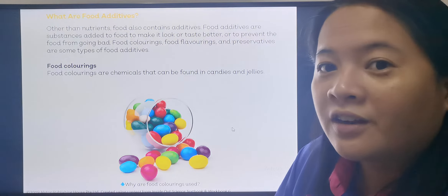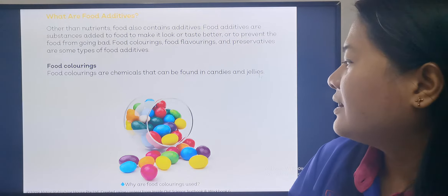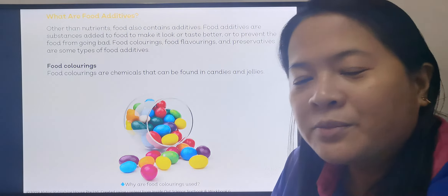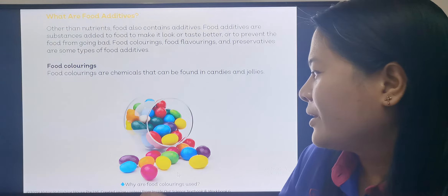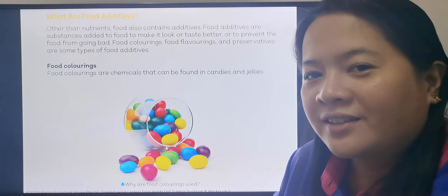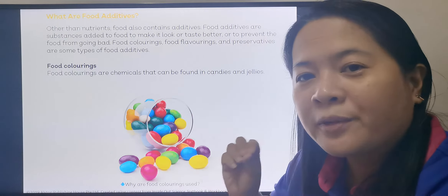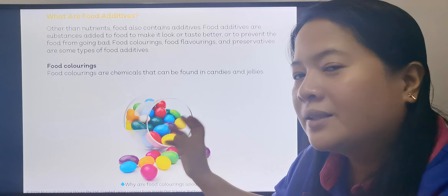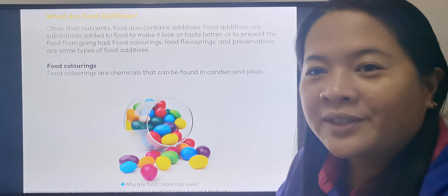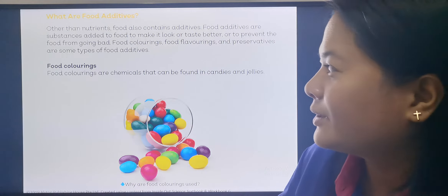Let's start with food colorings. Food colorings are chemicals that can be found in candies and jellies. If you look at this, most children like to eat M&Ms or Skittles. They put artificial coloring — it's not real, it's from chemicals — to make the food more appealing and look yummier. If it's only one color, then it's not as appealing to eat.